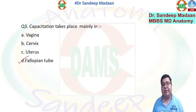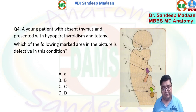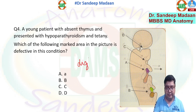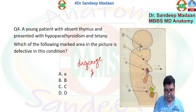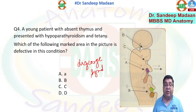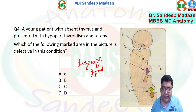The next question: a young patient with absent thymus, hypoparathyroidism, and tetany — what is the diagnosis? The answer is DiGeorge syndrome. Now, to understand where it involves, we look at the pharyngeal pouches. The first pharyngeal pouch makes the tympanic cavity and the auditory (Eustachian) tube.